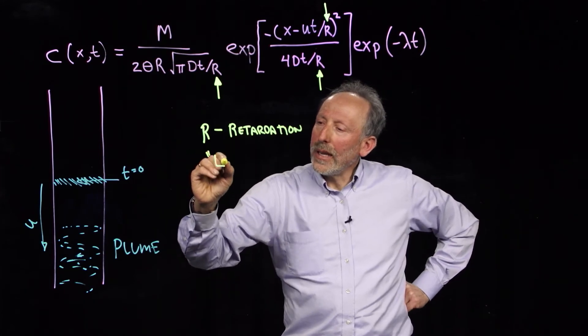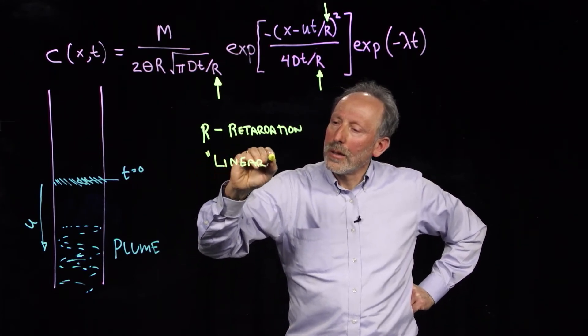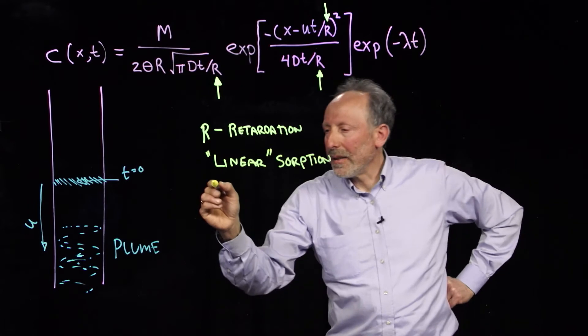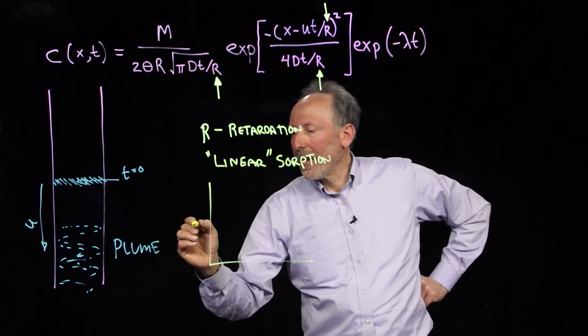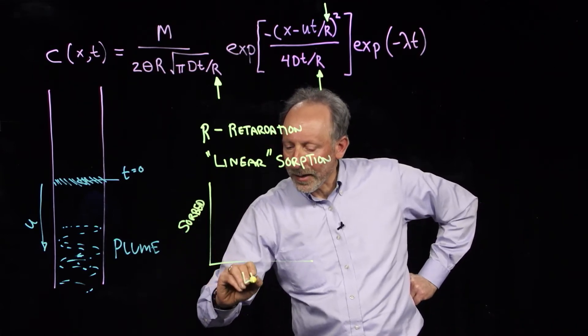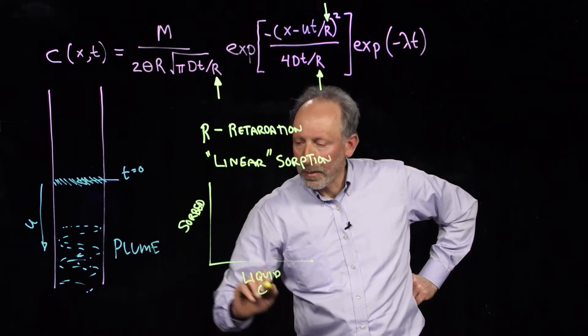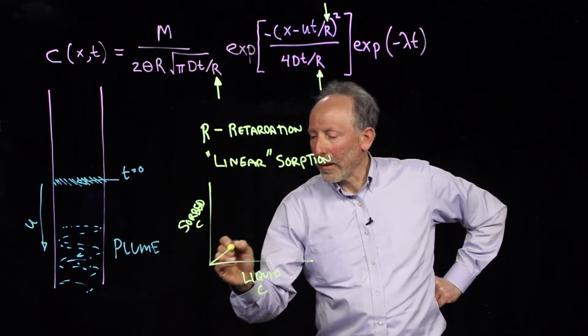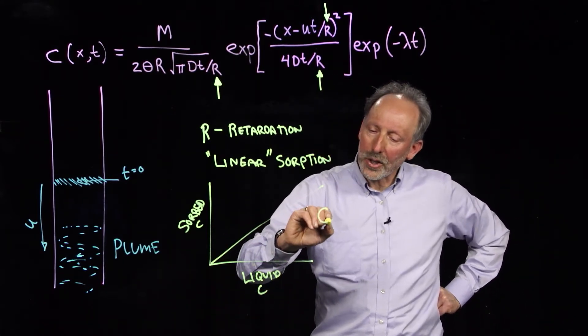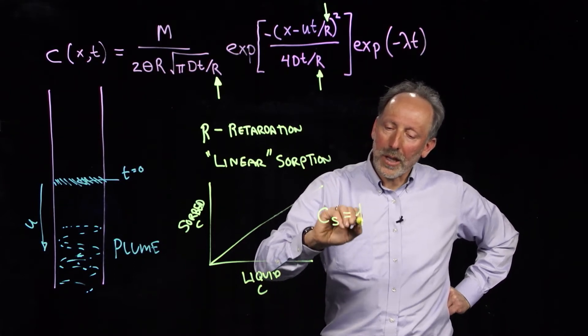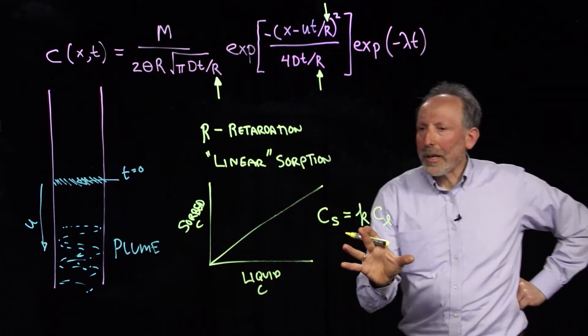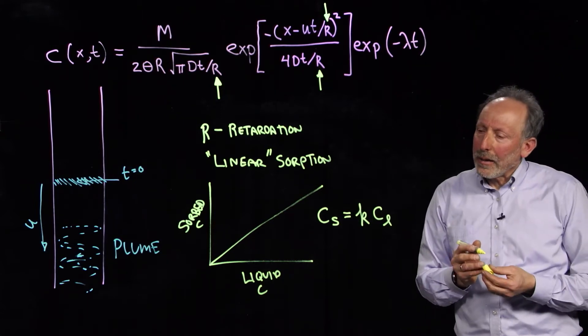And what that means is that the sorbed concentration versus the liquid phase is going to have a linear relationship. So, the concentration on the solid phase is equal to some coefficient times the concentration in the liquid phase. This description of sorption is very accurate for low concentrations.